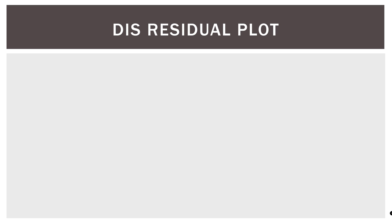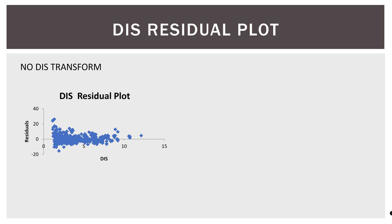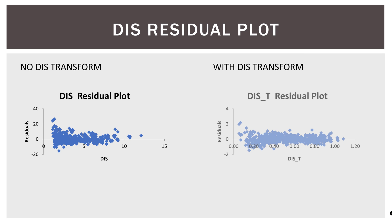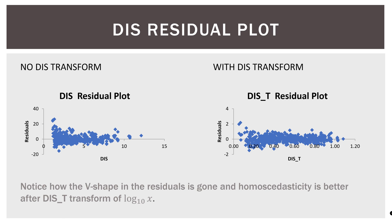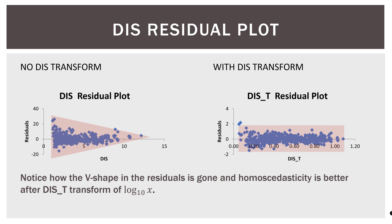The last one is the distance residual plot. Here's without transformation — you can already see the shape. With transformation, here's the shape — see the difference? Notice how the V shape in the residuals is gone and homoscedasticity is better after that transform. In this case, it was log base 10.